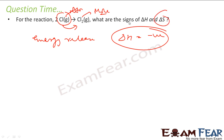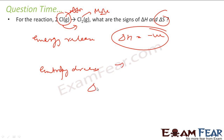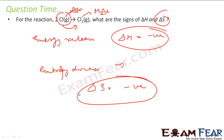Now talking about entropy — when the bond is formed, the entropy decreases. Why? Because the bond is formed, so the atom has less space to move around, so entropy decreases. Therefore delta S is negative. So in this case, both delta H and delta S have to be negative.